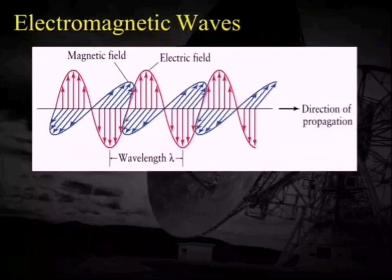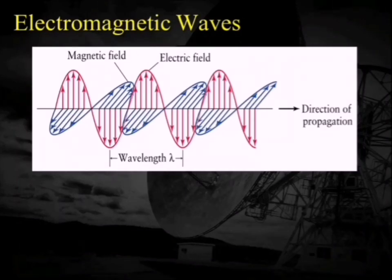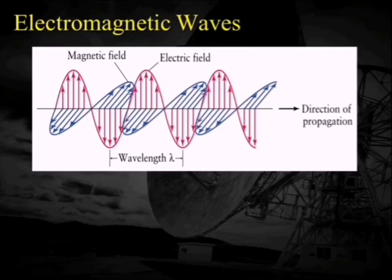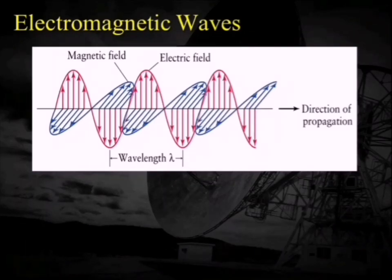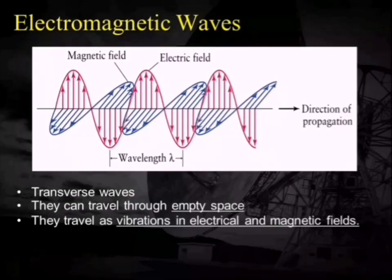Looking at this diagram, you'll find two waves: one in red and one in blue, traveling along the z direction. The blue wave represents the magnetic field in the x-plane, while the red wave represents the electric field in the y-plane, and the direction of propagation is the z direction. These three are mutually perpendicular to each other — we call them transverse waves. They travel through empty space as vibrations in the electric and magnetic fields, shown here with arrows.